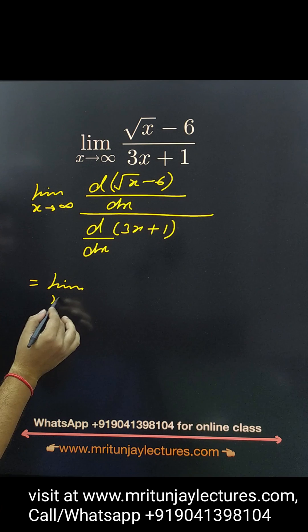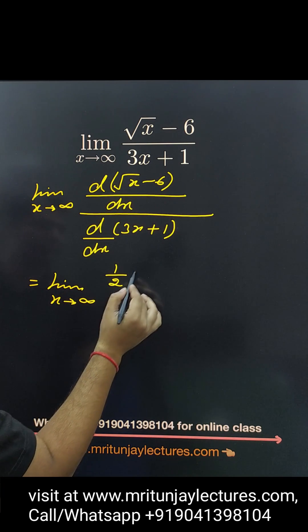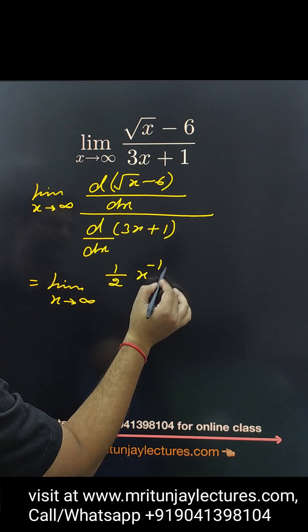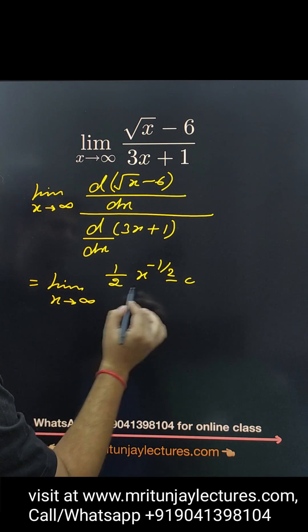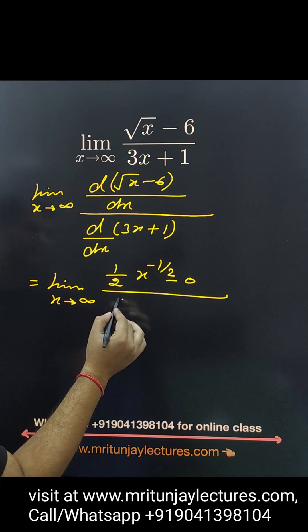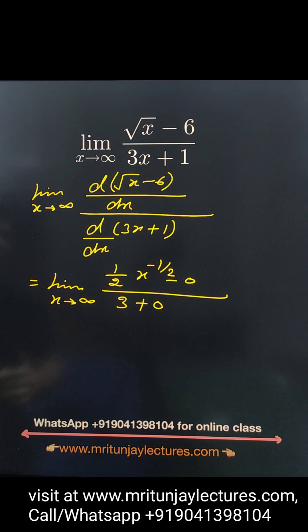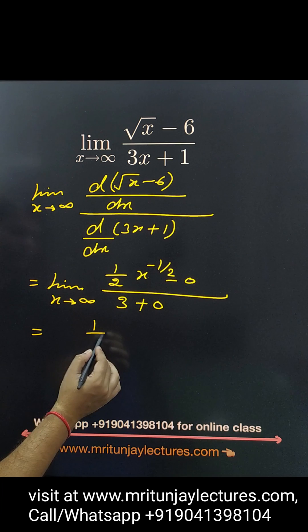So written here limit x tends to infinity, that is 1 by 2x to power minus half minus 0. Differentiation of 6 is 0, and that is 3 plus 0. Now after that, that value is 1 by 2 root x.